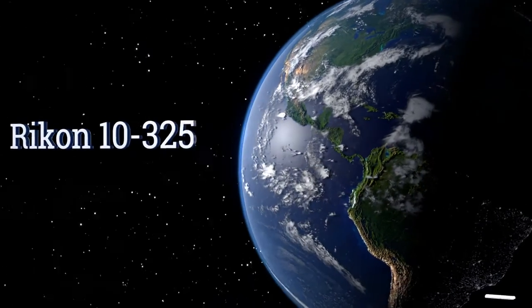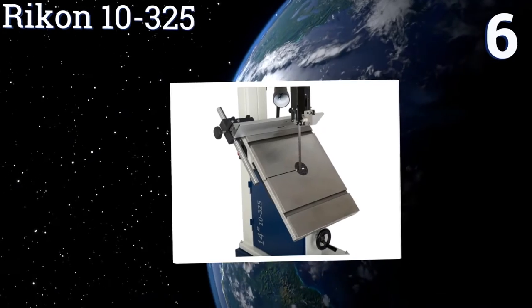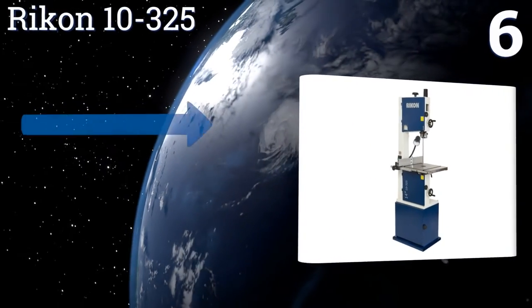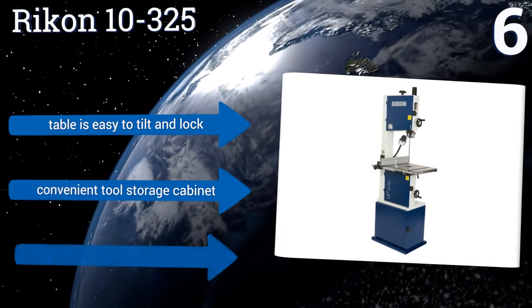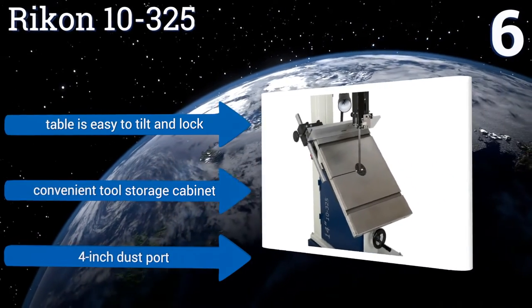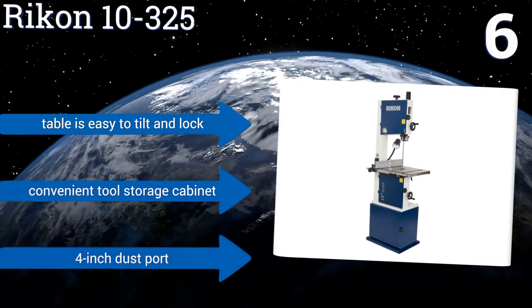Moving up our list to number 6, easily cut wood and non-ferrous metals alike with the Rikon 10-325. This tool was designed with two speeds for cutting versatility and features a heavy-duty rip fence with a re-saw bar. It accepts blades from 1/8 of an inch to 3/4 of an inch thick. The table is easy to tilt and lock, and it includes a convenient tool storage cabinet and a 4-inch dust port.